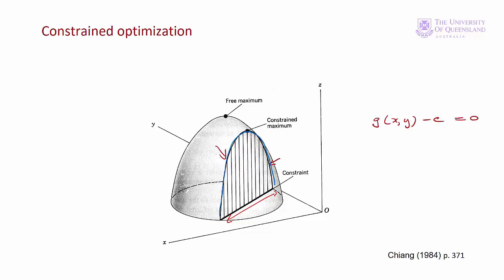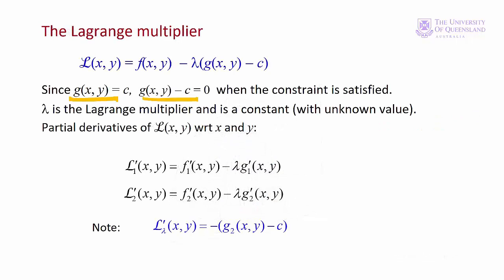How do we find that point? We can take the first partial derivatives of the Lagrangian with respect to x and y. Many textbooks also show that we can differentiate the Lagrangian with respect to lambda — lambda is a constant for each problem but we can treat it as a variable and differentiate with respect to it. I mention it in case you come across this form in another course. We'll see how our textbook treats the first order conditions in just a moment.